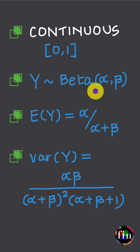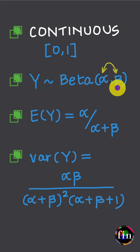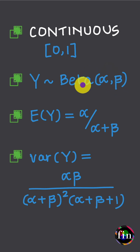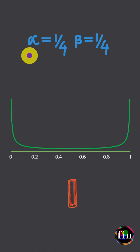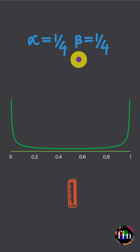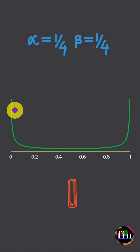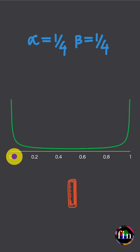Now let us look at a number of cases wherein different choices of the values of alpha and beta result in different shapes for the beta distribution. Case 1 is when I set alpha and beta both to be equal to 1 over 4, that means a value less than 1. In this case, my beta distribution places a higher probability weight near the extreme values of 0 and 1.